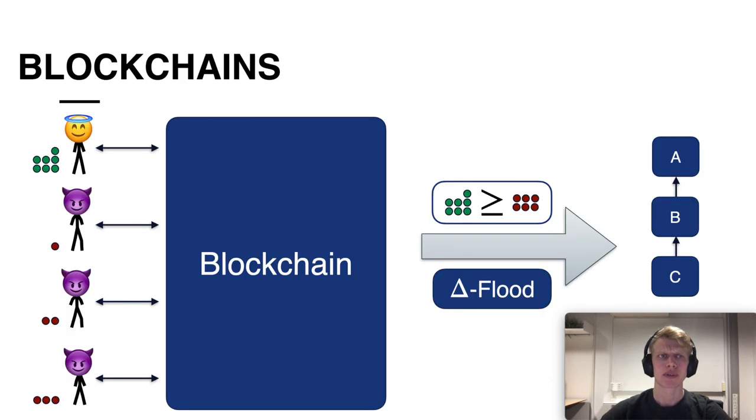With this in mind let's revisit our blockchain example from before. Blockchain, in order to build a total order, relied on the majority of honest resources and on such a flooding network.